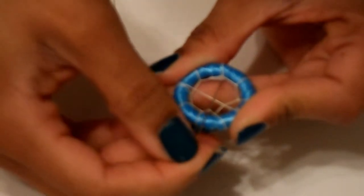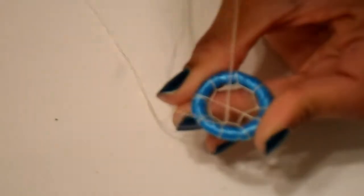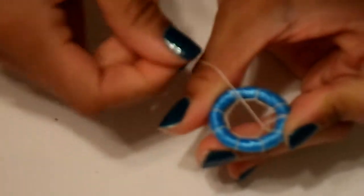Now the process gets a little easier. You will go underneath the thread on the edge and then go over itself and pull tightly. You will continue this process until you reach the center of the ring.